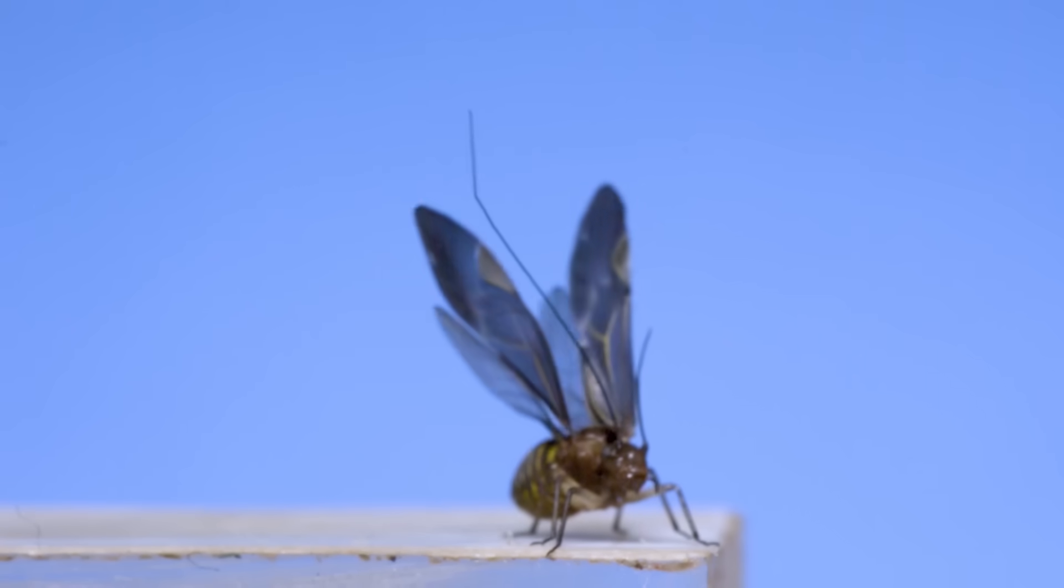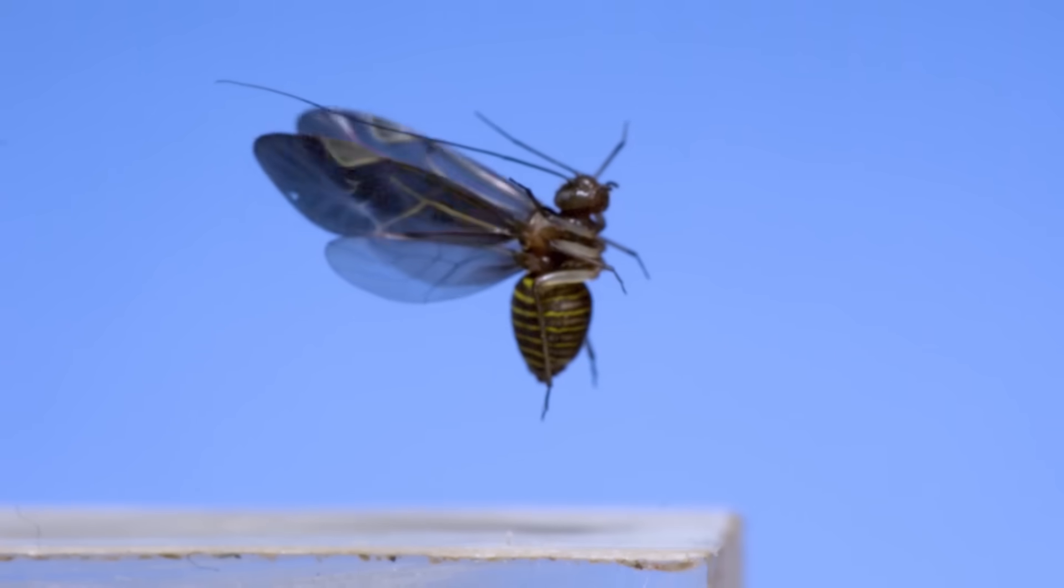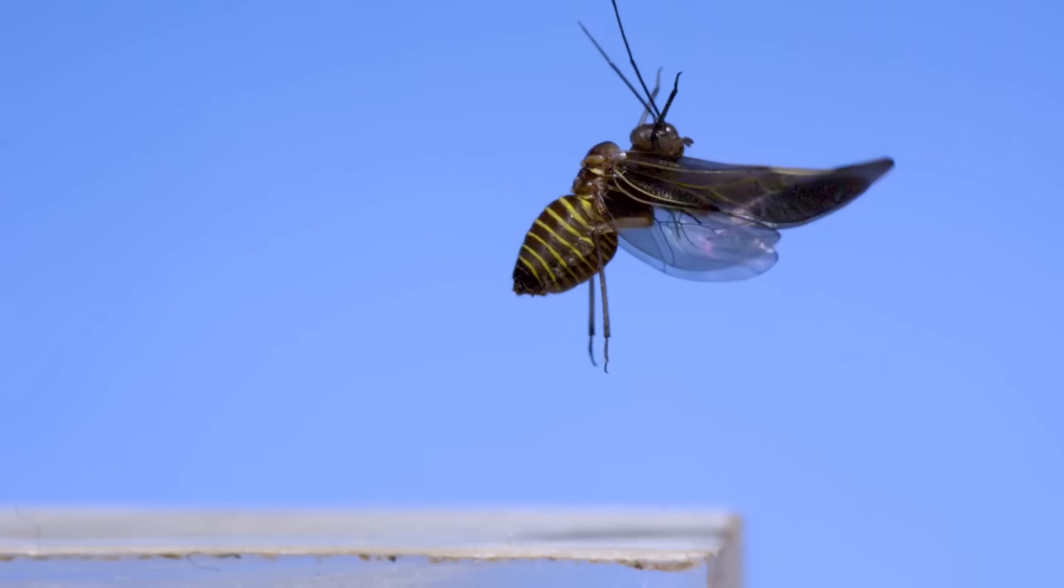This last shot of a bark lice starts out out of focus, but when it comes in, it's amazing to see it in a near hover, flexing its yellow and black striped abdomen up and down with every wing beat.